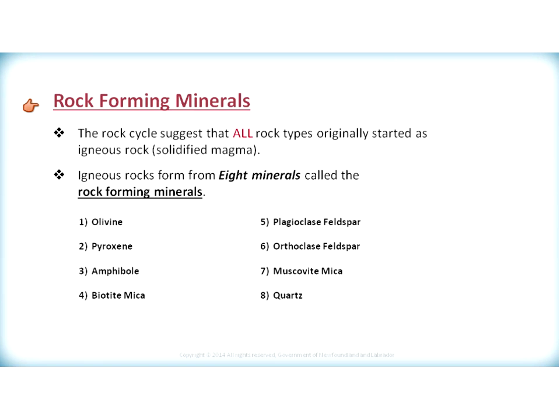When we look at igneous rocks, all igneous rocks basically originate from rock-forming minerals. The rock cycle suggests that all rock types originally started as igneous rock, which solidified from magma, or molten rock, at some point in time. The igneous rocks form from eight minerals, and these are called your rock-forming minerals.